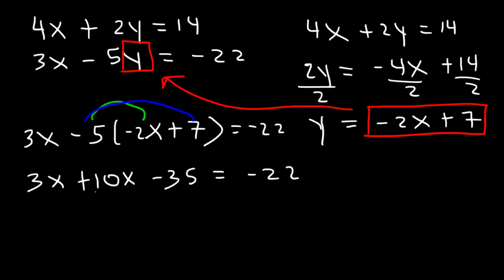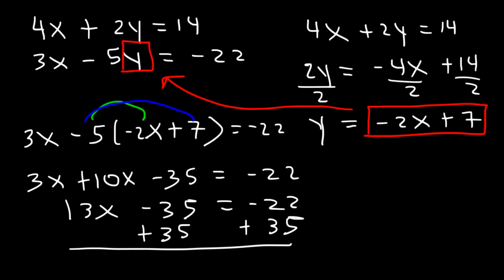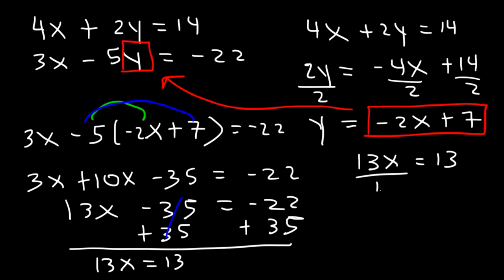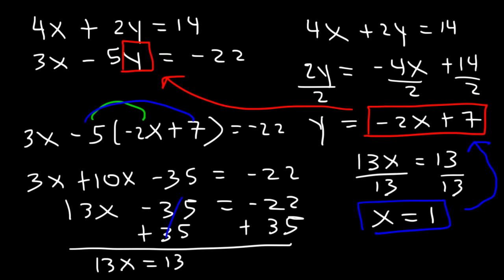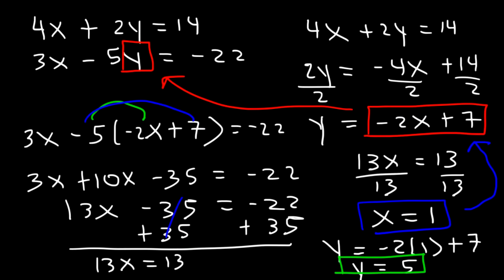Combining like terms: 3x plus 10x is 13x. Adding 35 to both sides: negative 22 plus 35 is 13. So 13x equals 13. Dividing both sides by 13, x equals 1. Plugging back into y equals negative 2x plus 7: negative 2 times 1 is negative 2, and negative 2 plus 7 is 5. So y equals 5. The solution as an ordered pair is (1, 5).